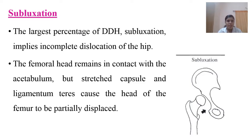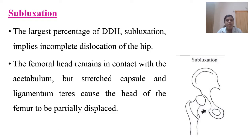The second type is subluxation, which represents the largest percentage of DDH cases and is also known as incomplete dislocation of the hip. Here the femoral head remains in contact with the acetabulum, but due to overstretched capsules and tearing of the ligamentum, the head cannot fully attach to the socket. The acetabulum is wide, but the ligamentum tear prevents proper attachment.